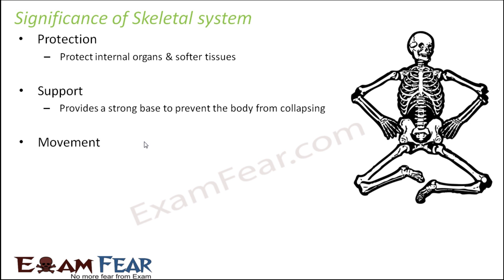The skeletal system provides support because it gives a strong base to prevent the body from collapsing. When you look at your body, you can feel the skin and the flesh under it — they are all soft. For example, when you get a cut, it starts to bleed because the skin gets damaged easily. But since you have strong bones inside, your bones fracture only in a severe accident; otherwise they are strong enough to support your body and prevent it from collapsing.